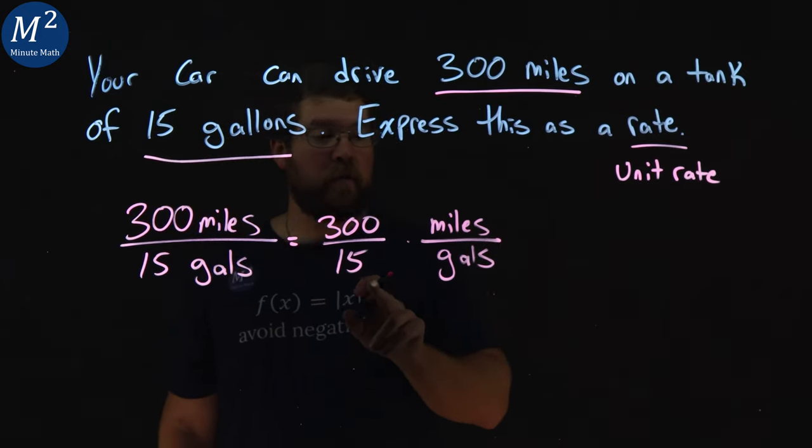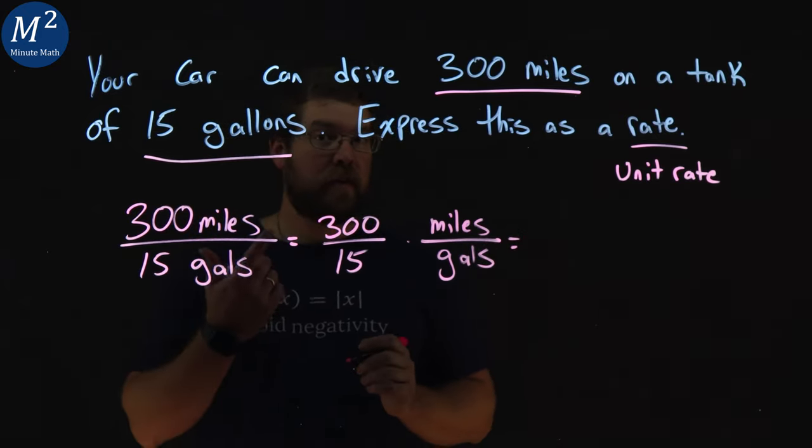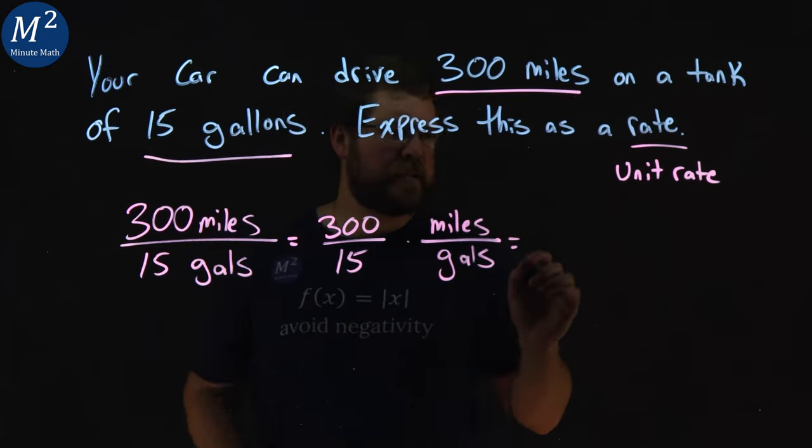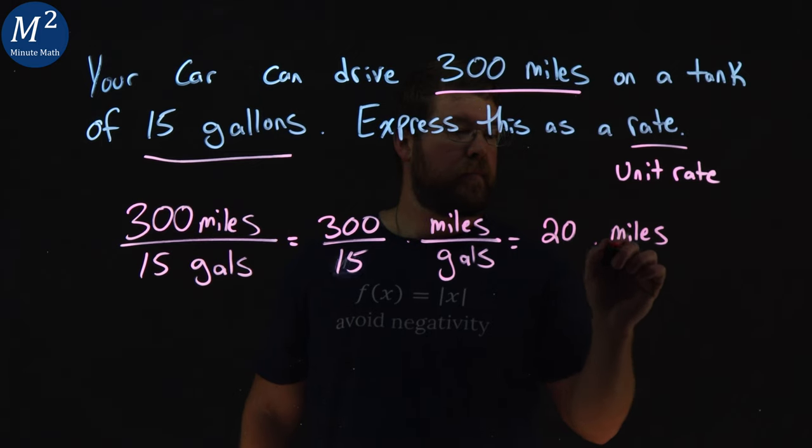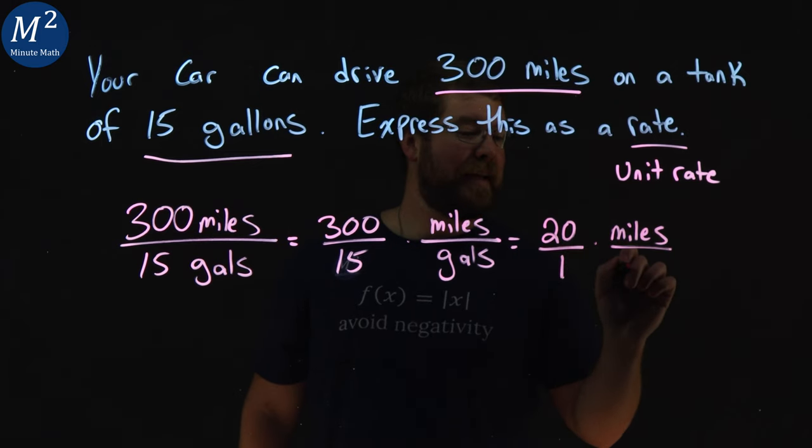Simplify that 300 over 15. That gives us, well, 300 divided by 15 is 20. So, we have 20 miles per one gallon.